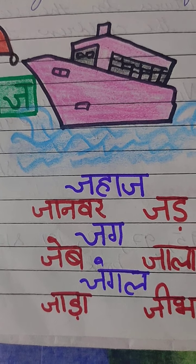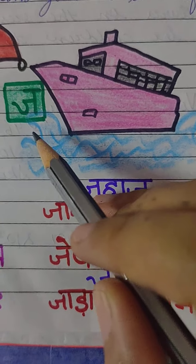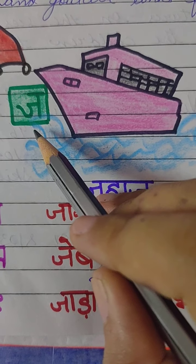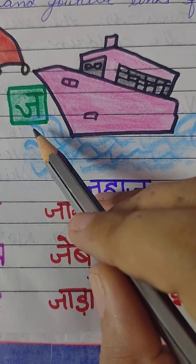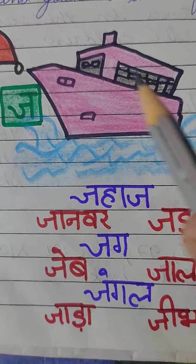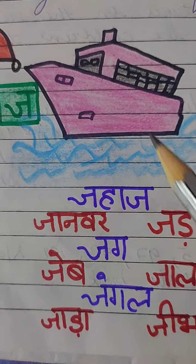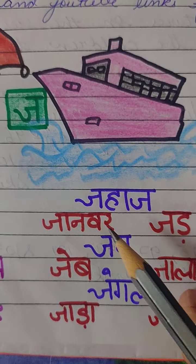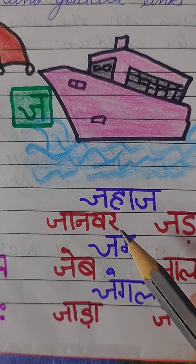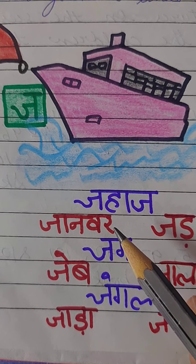Now children, we are going to learn Vyanjan J. Which is this Vyanjan? J. J say Jahaj. J say Janvar. Janvar means animal.